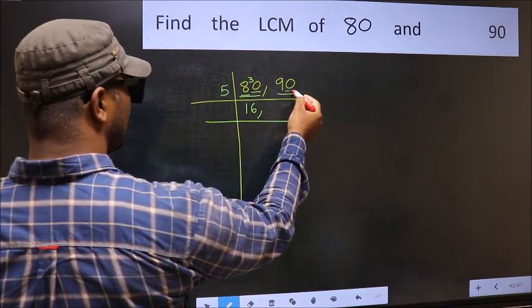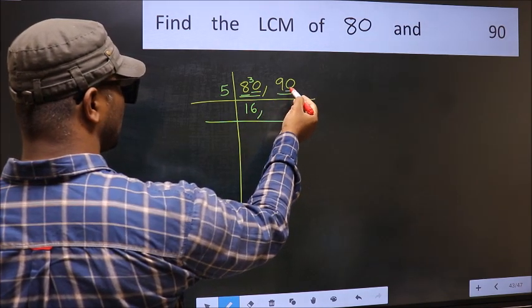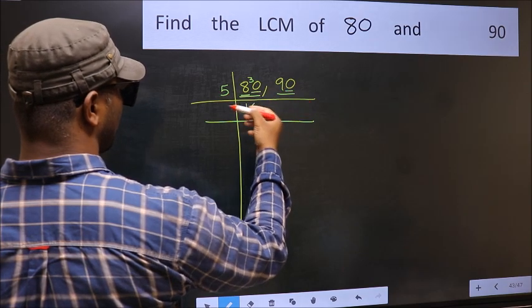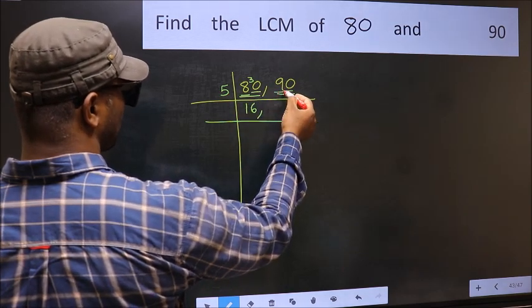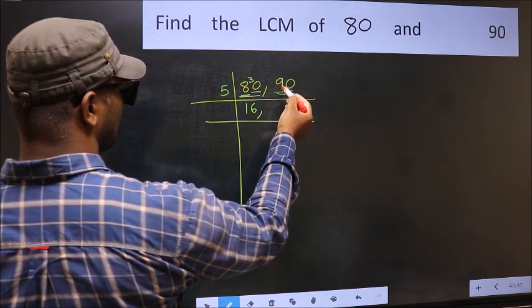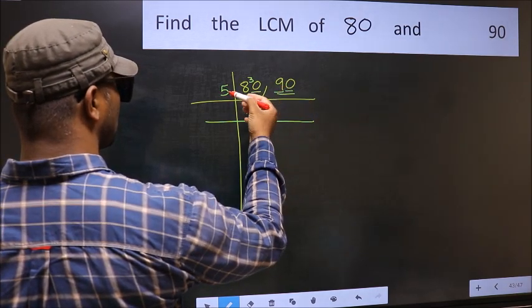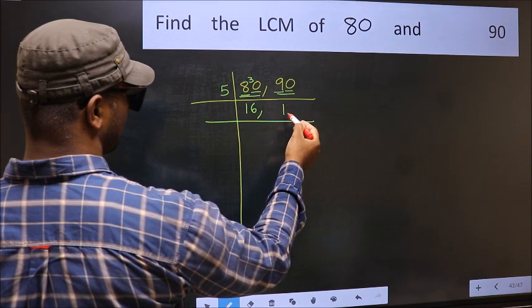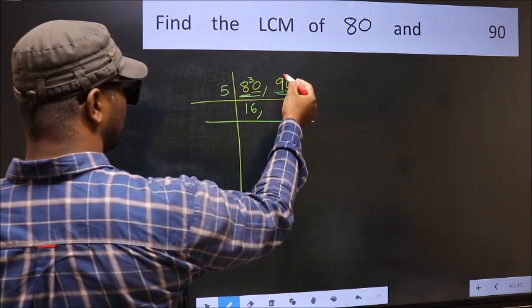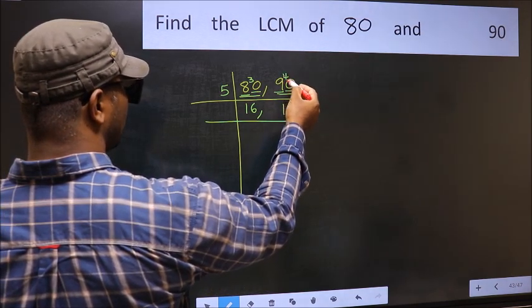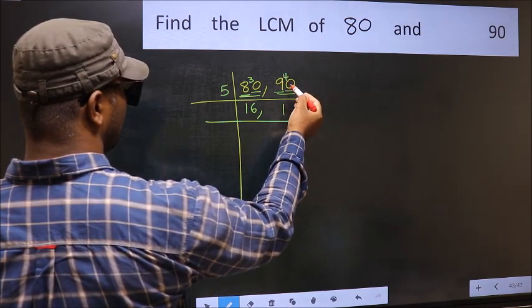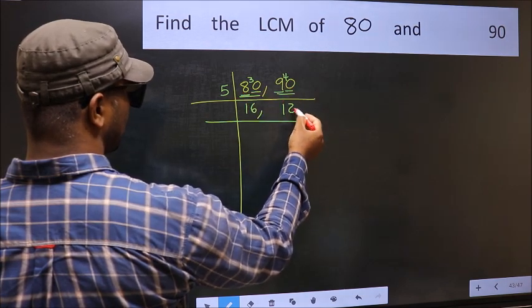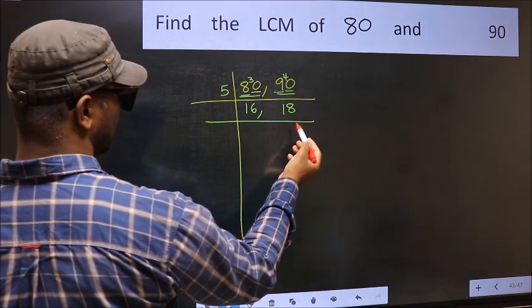The other number is 90. The last digit is 0, so it is divisible by 5. The first digit is 9. A number close to 9 in the 5 table is 5 once, which is 5. 9 minus 5 is 4, carried forward to 40. We get 40 in the 5 table at 5 eights, which is 40. So 90 divided by 5 gives 18.